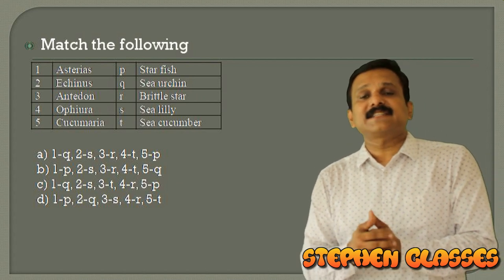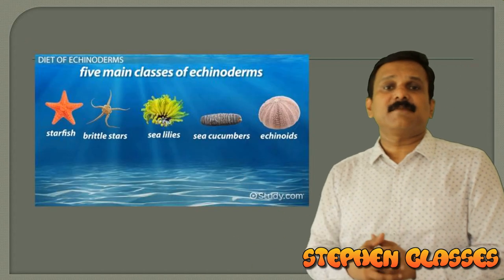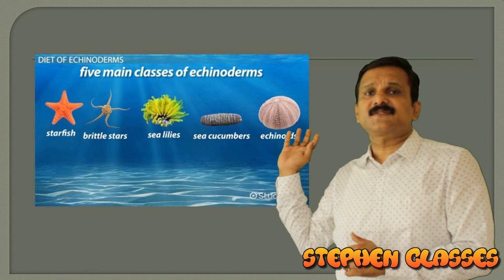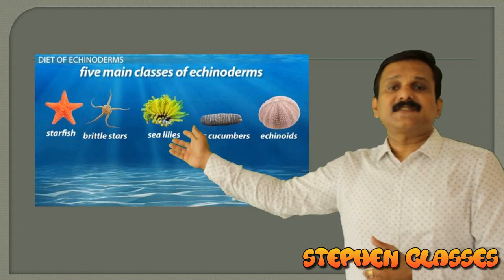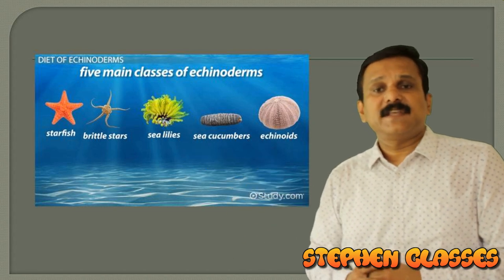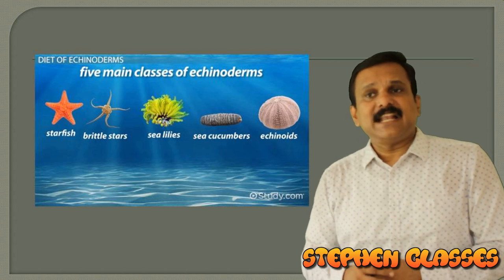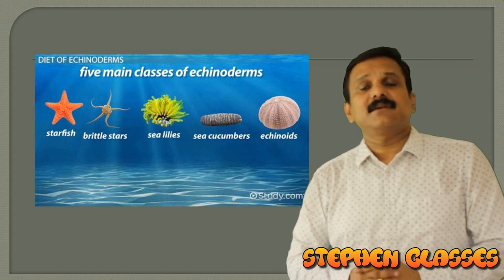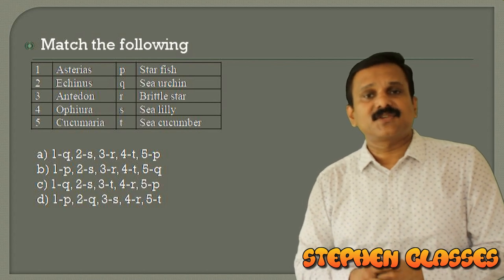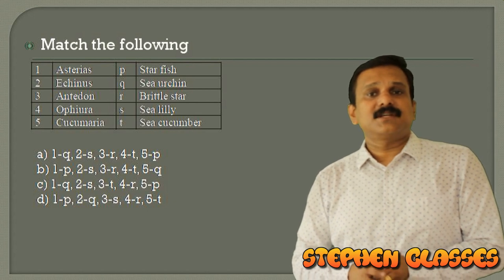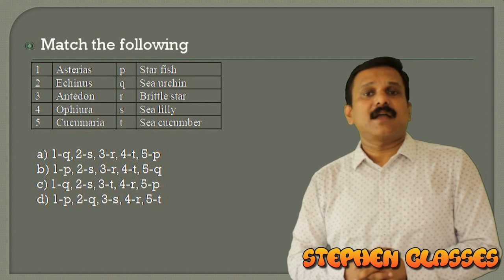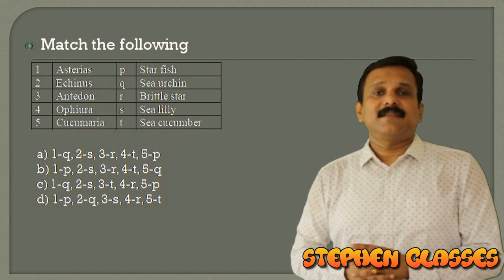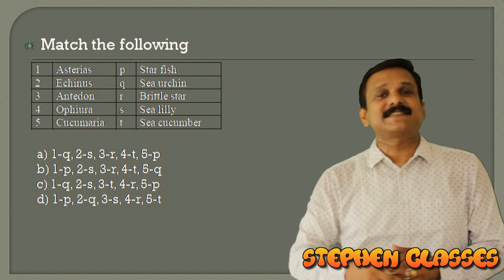Next match-the-following question on echinoderms: Asterias — starfish (Asteroidea), Echinus — sea urchin, Antedon — sea lily, Ophiura — brittle star, Cucumaria — sea cucumber. After matching all correctly, the correct answer is option D.